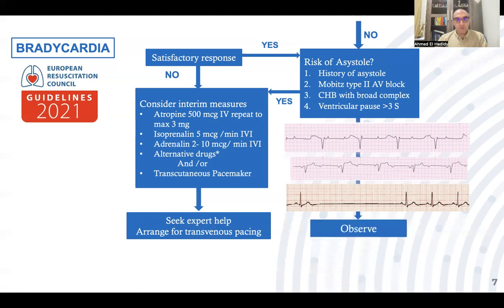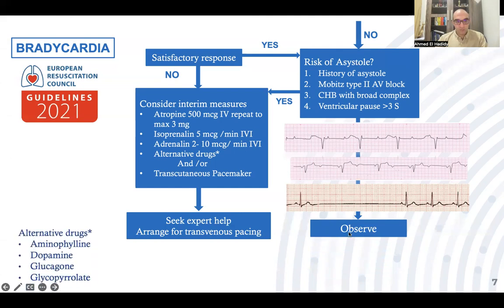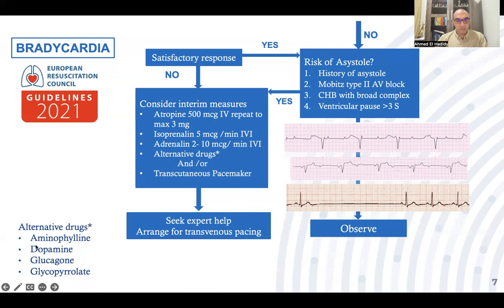If there is no risk of asystole and no life-threatening condition, simply observe the patient. Other alternative drugs beyond atropine, isoprenaline, and adrenaline include aminophylline, dopamine, glucagon, and glycopyrrolate.